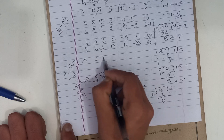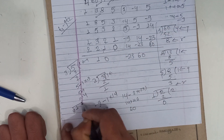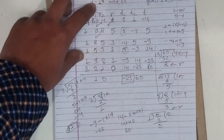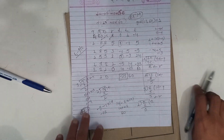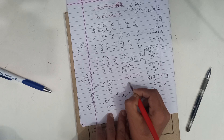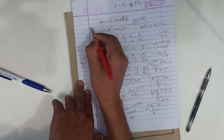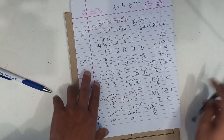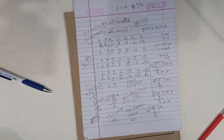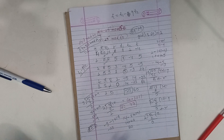Remainder is 0, so we stop. The d value is 37. We verify: e into d mod 60, that is 13 times 37 mod 60 equals 1. So this is all about the extended Euclidean algorithm to find the multiplicative inverse. Thank you.